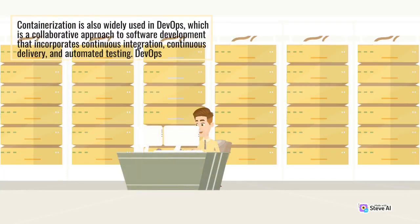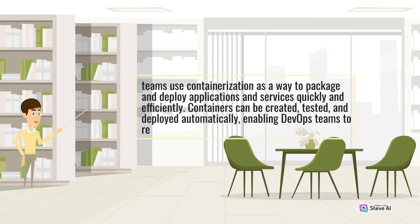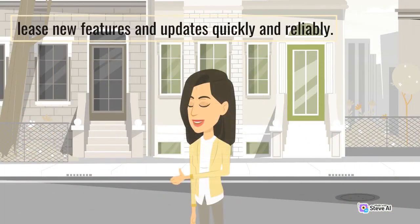Containerization is also widely used in DevOps, which is a collaborative approach to software development that incorporates continuous integration, continuous delivery, and automated testing. DevOps teams use containerization as a way to package and deploy applications and services quickly and efficiently. Containers can be created, tested, and deployed automatically, enabling DevOps teams to release new features and updates quickly and reliably.